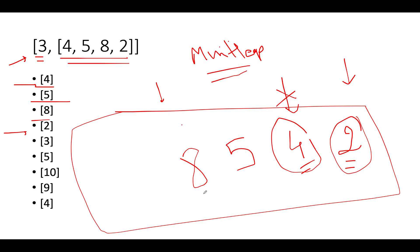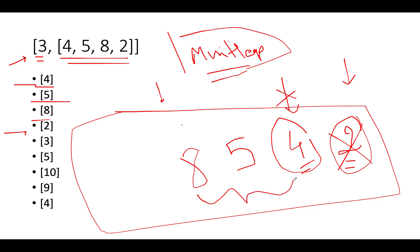Now the size of the heap has exceeded k, so we must do eviction. The lowest element gets evicted — MinHeap handles this automatically. So 2 is removed and we maintain the top three largest elements: 4, 5, and 8. The topmost element becomes 4. If someone asks what is the third largest element after adding 4, 5, 8, and 2, the answer is 4.